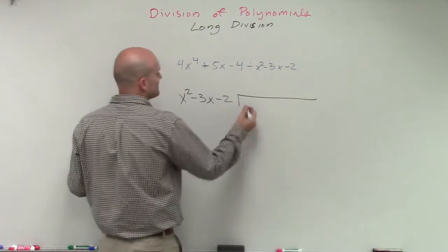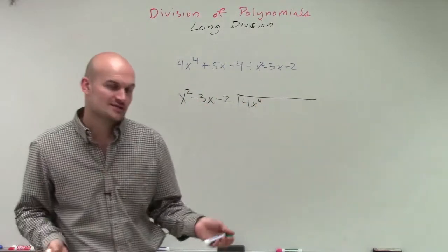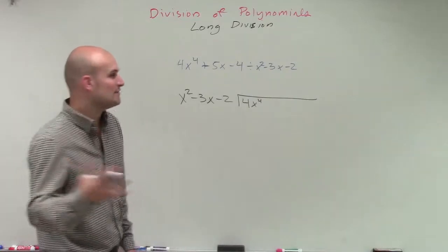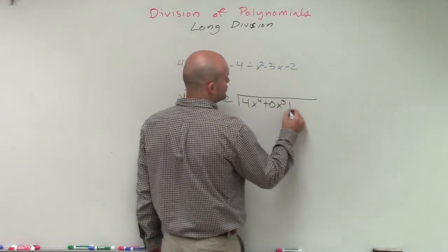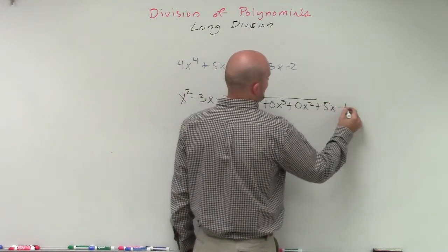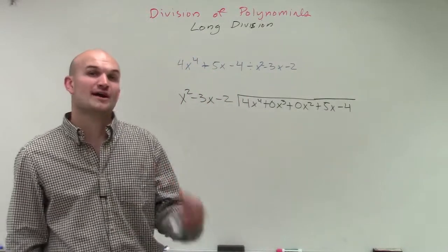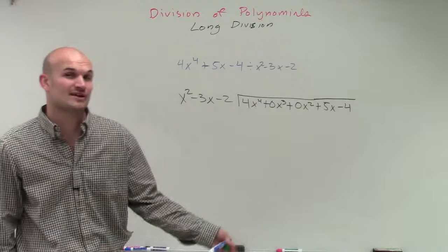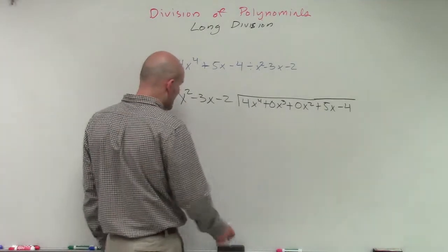And it's going to divide into our dividend of 4x to the fourth. Now, rather than writing 5x as my next term, I'm just going to write down all of the place values we have for our dividend. So it would be plus 0x cubed plus 0x squared plus 5x minus 4. It's not something that's necessary, but it is very, very helpful when trying to understand, or even doing a problem like this that can be very complicated, just to make sure we have all the right values.